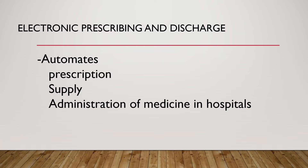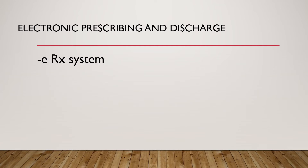An important application of computer in pharmacy involves the electronic prescribing and discharge system. This system automates the prescription, supply, and administration of medicines in hospitals. This not only smoothens the process but also reduces medication-related errors, which ultimately has a very good impact on patient safety. The effect is dependent on the system design and its implementation.